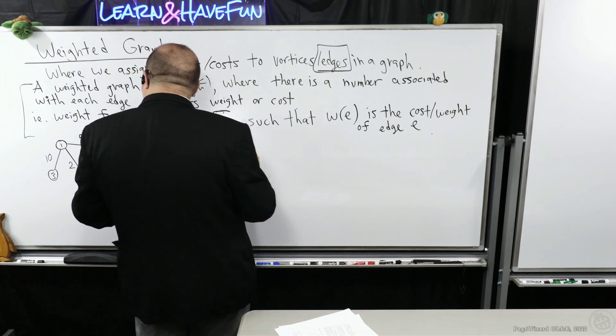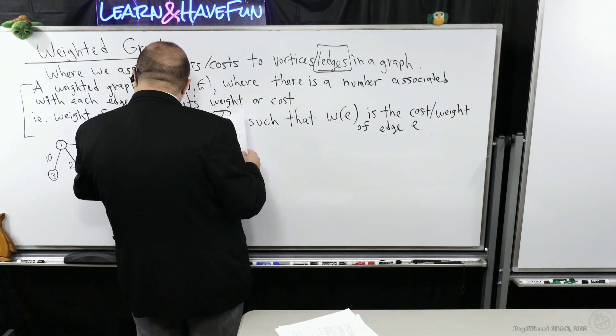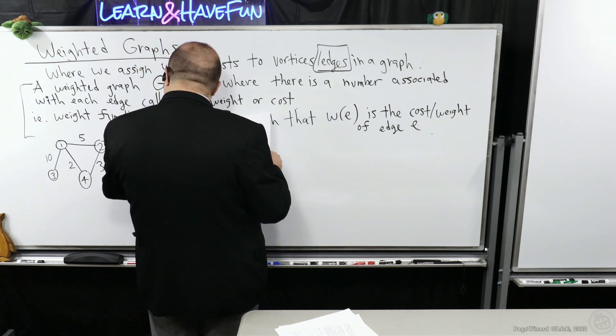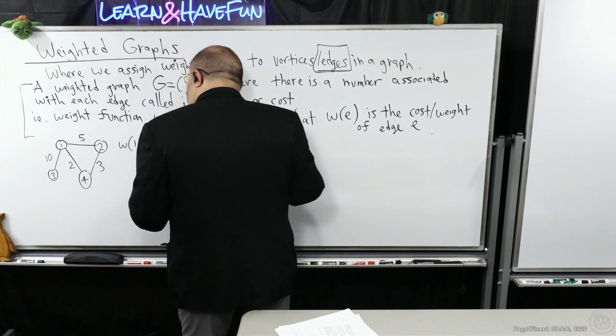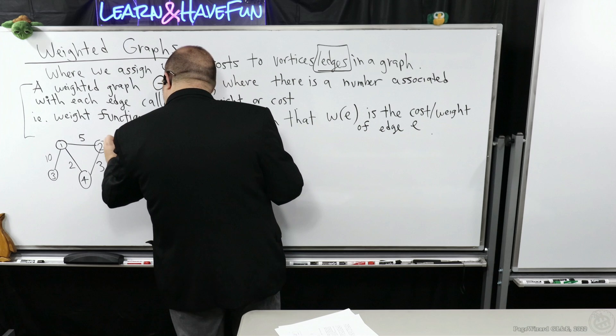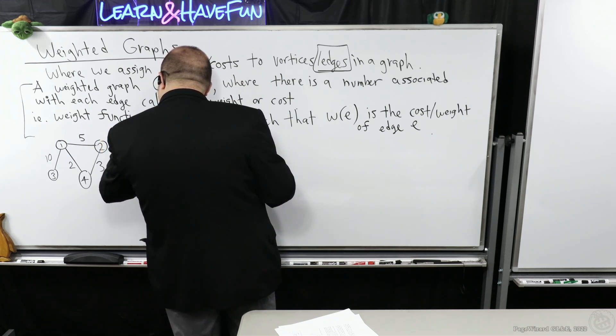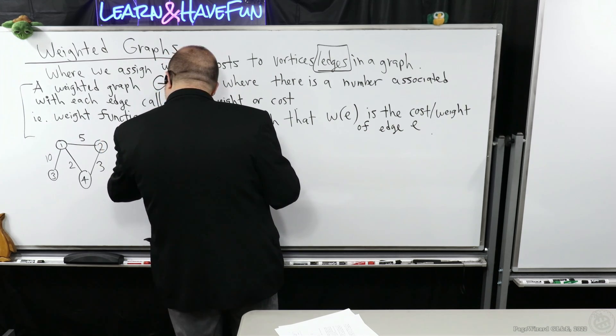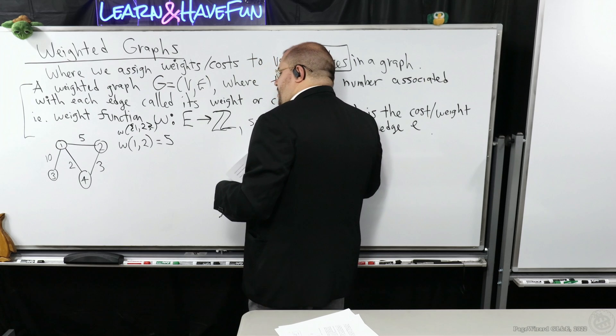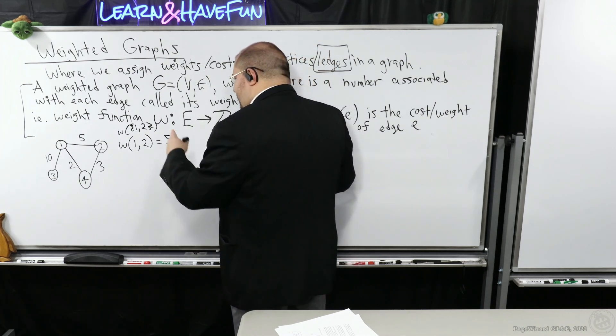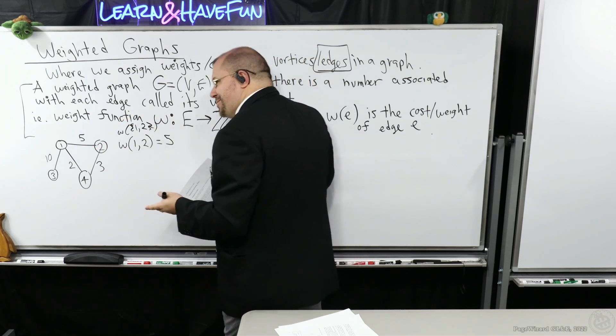So, in this example here, the weight of one, two is five. And I must stress that this is more of an abbreviation, because I could also write this as one, two, like this. If that's edge E, that's an example right there.